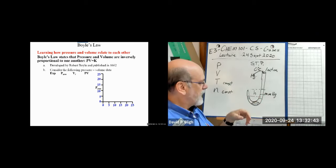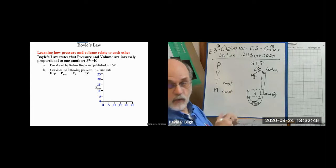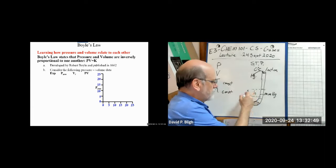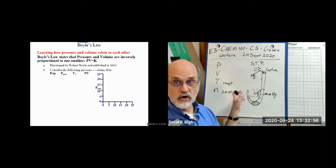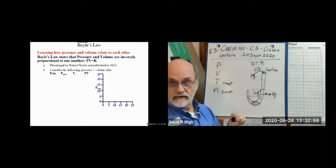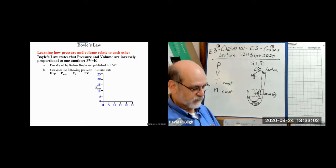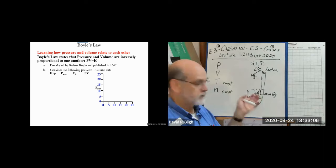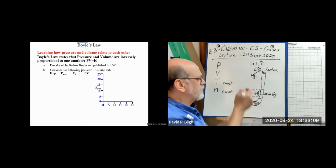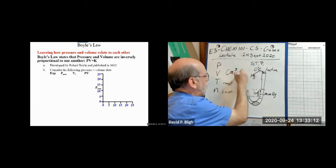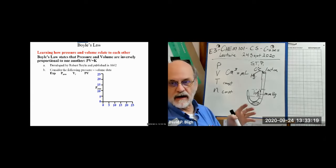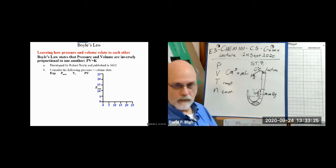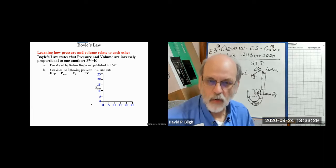As Boyle added more mercury to the long side, the short side didn't come up as fast. He reasoned that as he confined the gas to a smaller volume, it applied more pressure, supporting the mercury column. He measured the height difference between the two sides — a measure of pressure in millimeters of mercury. The volume of the trapped gas was calculated from the height times π·d²/4 using the known tube diameter.